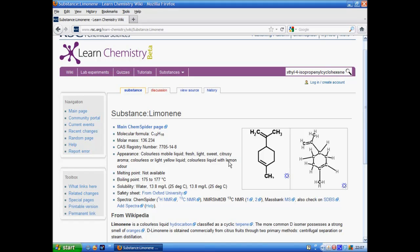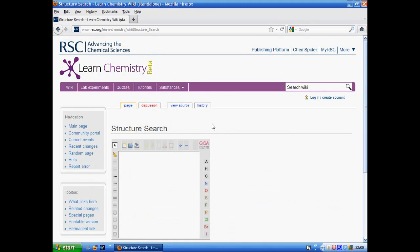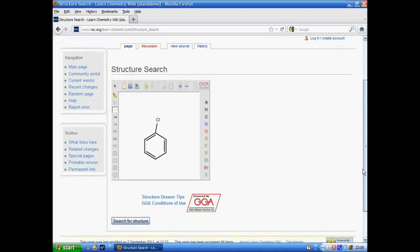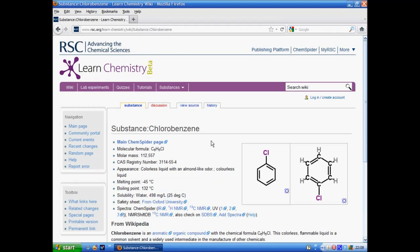It's possible to find your way to a substance page by following links, by doing a text search on the various names, and another way is to do a structure search. This is another advanced feature of the Wiki in that if you don't know the name of the compound you can draw it in using this catcher drawing frame, then click on the search button.